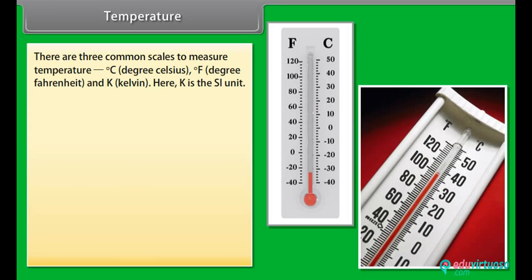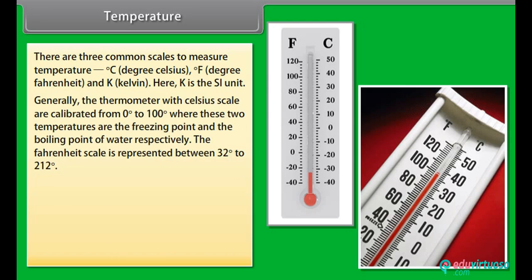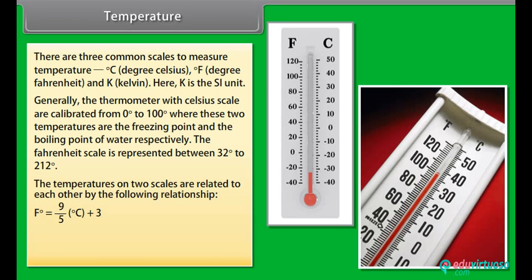There are three common scales to measure temperature: degree Celsius, degree Fahrenheit and Kelvin. Here, K is the SI unit. Generally, the thermometer with Celsius scale are calibrated from 0 degree Celsius to 100 degree, whereas these two temperatures are the freezing point and the boiling point of water respectively. The Fahrenheit scale is represented between 32 degrees to 212 degrees. The temperatures on two scales are related to each other by the following relationship: degree Fahrenheit is equal to 9/5 degree Celsius plus 32. The Kelvin scale is related to Celsius scale as follows: Kelvin is equal to degree Celsius plus 273.15.